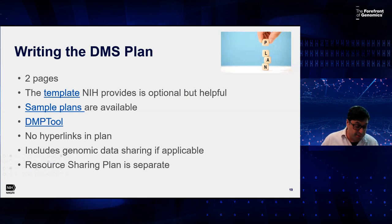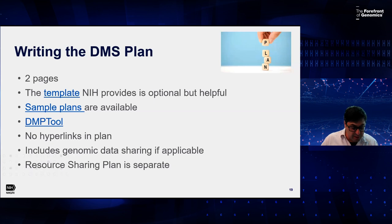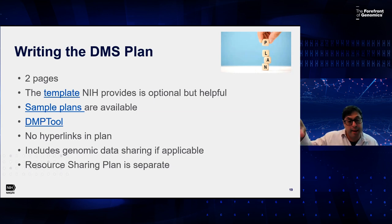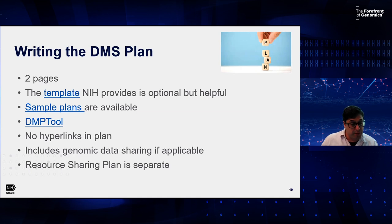A few bits of specific advice: Do not include any hyperlinks in your data management and sharing plan before you submit — get rid of them. If there are hyperlinks in your plan, it can cause your entire grant to be rejected before it's reviewed. Most ELSI grants aren't going to be collecting genomic data, but if you are, the genomic data sharing plan — which is a different kind of plan — gets embedded within this larger data management and sharing plan. Finally, you may remember resource sharing plans. Those still may be required in addition to a data management and sharing plan. Check your notice of funding opportunity to see if a resource sharing plan is required. These are now used to describe the dissemination of other grant products besides data, like publications, websites, or research tools.